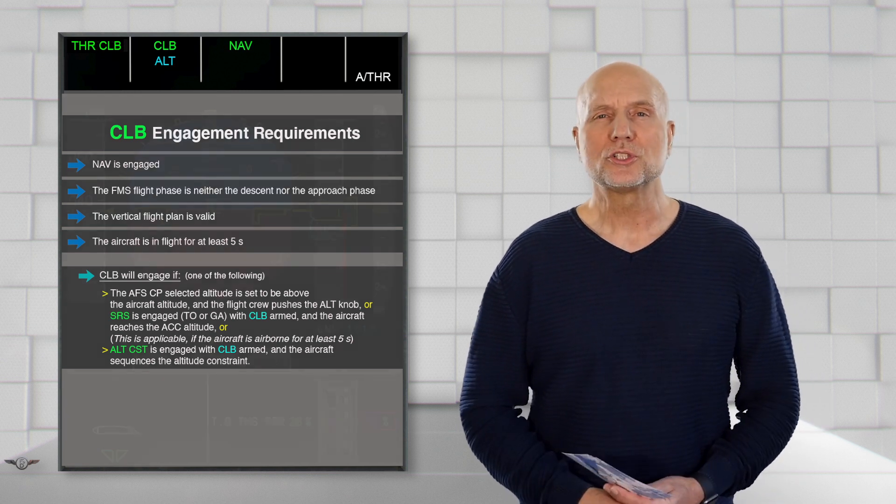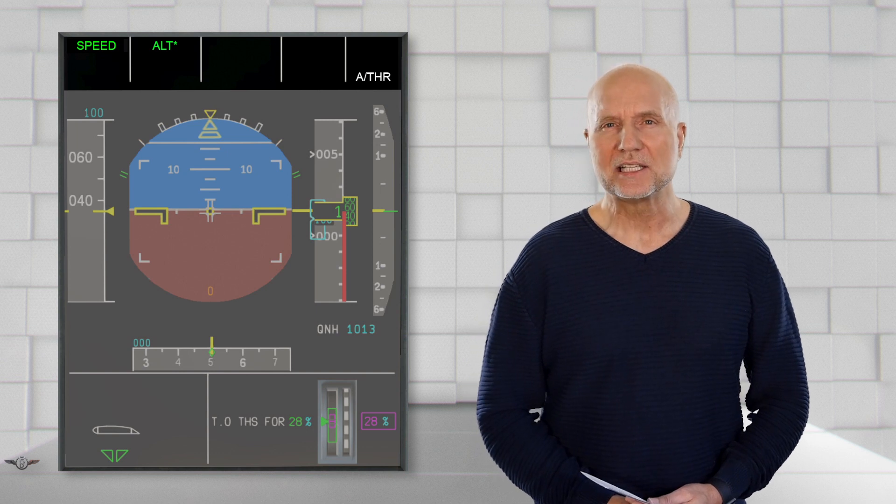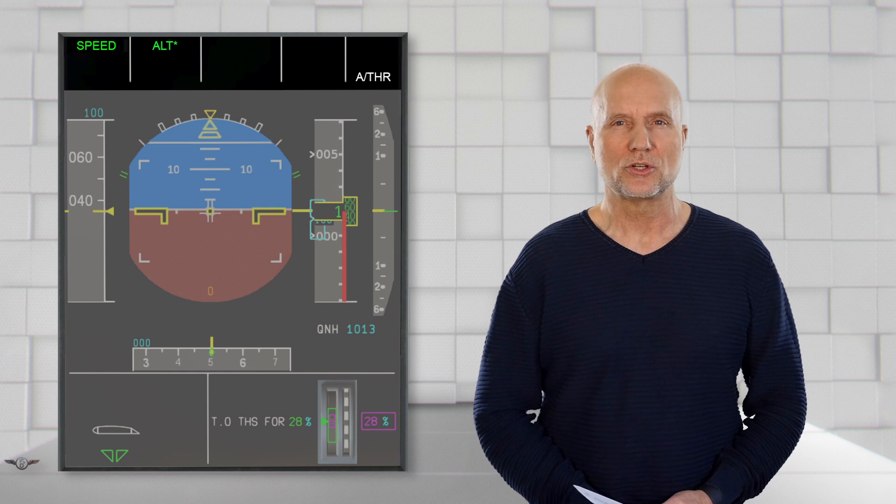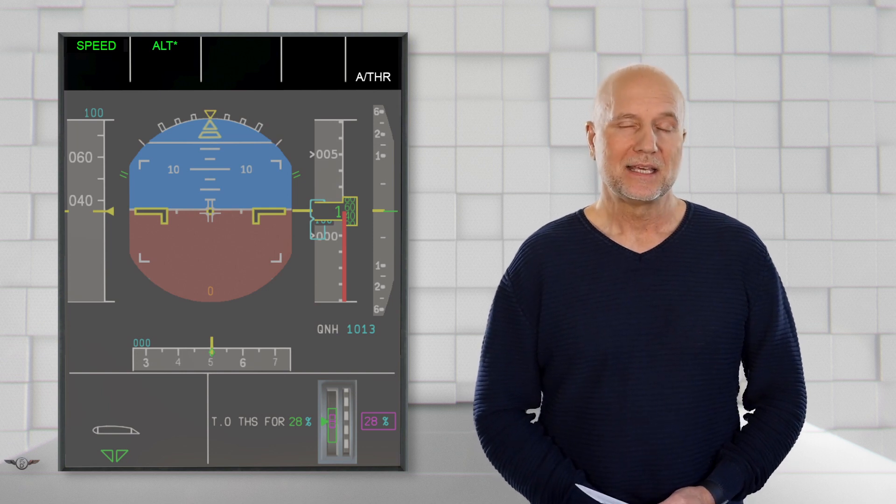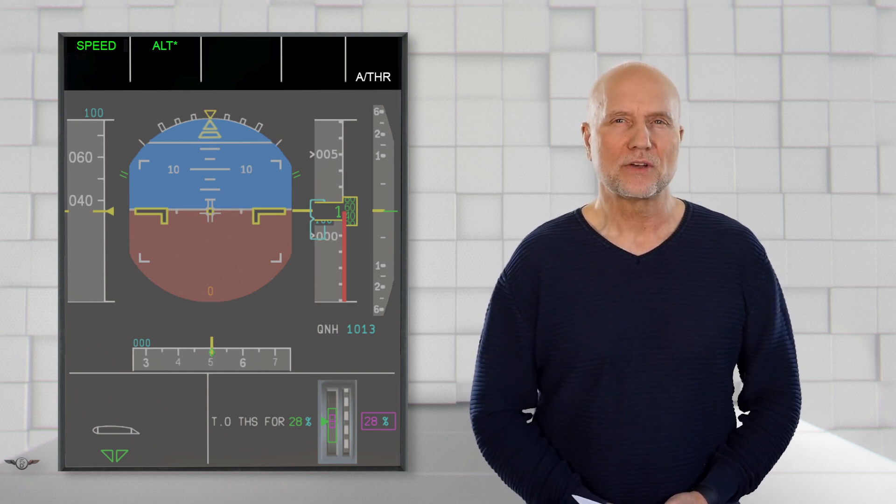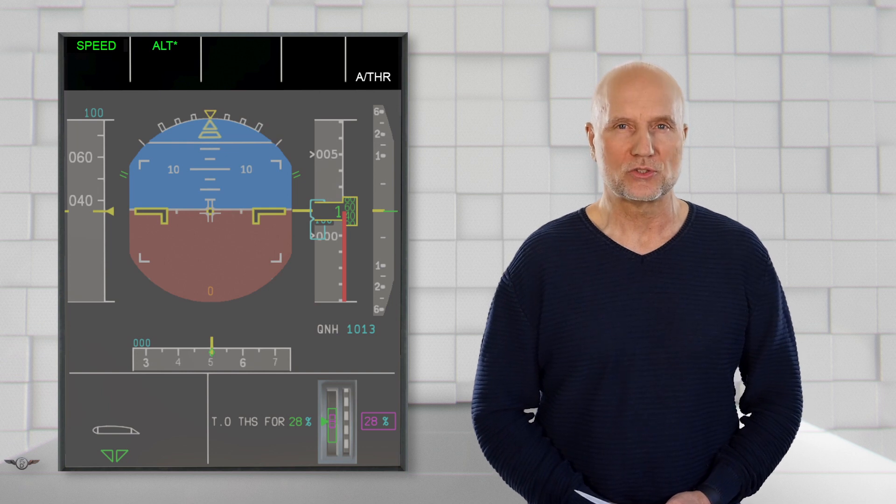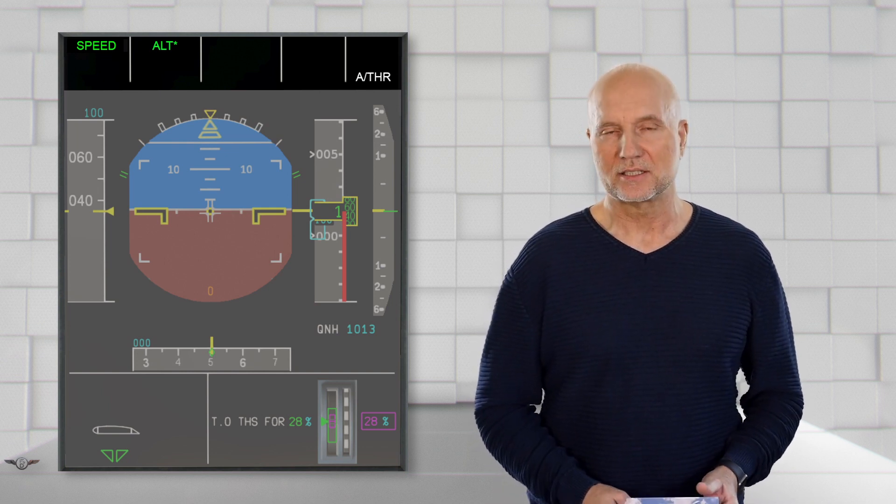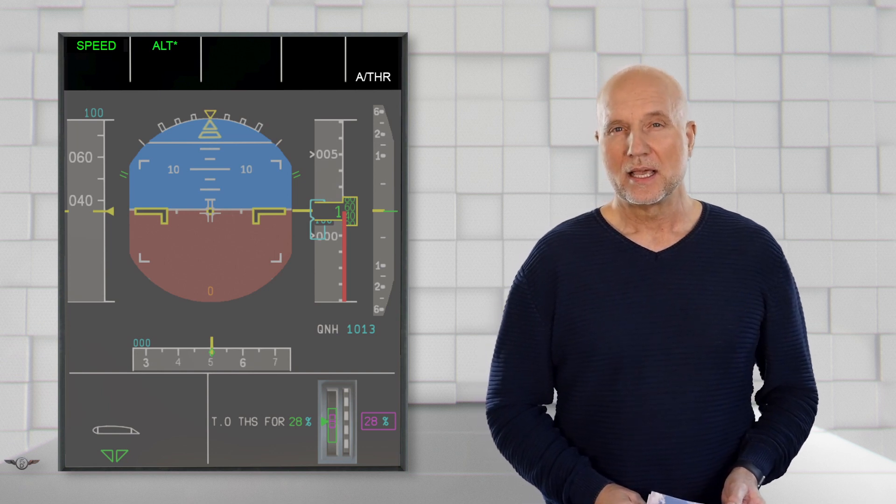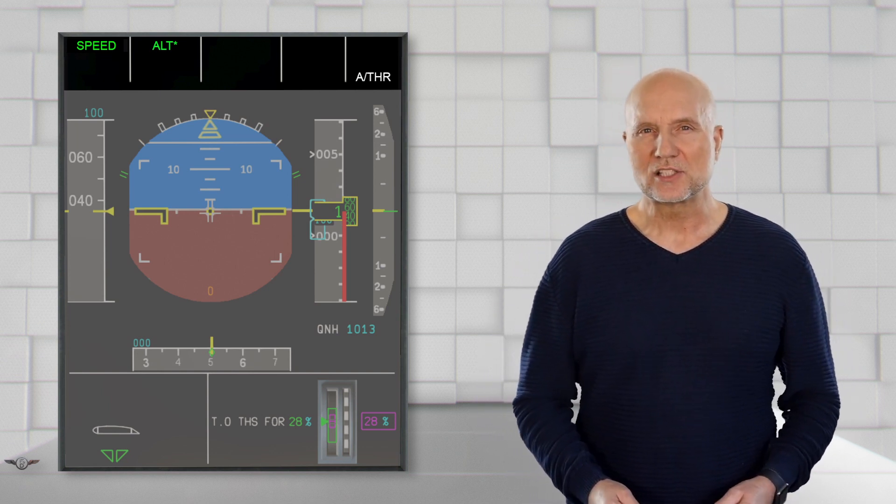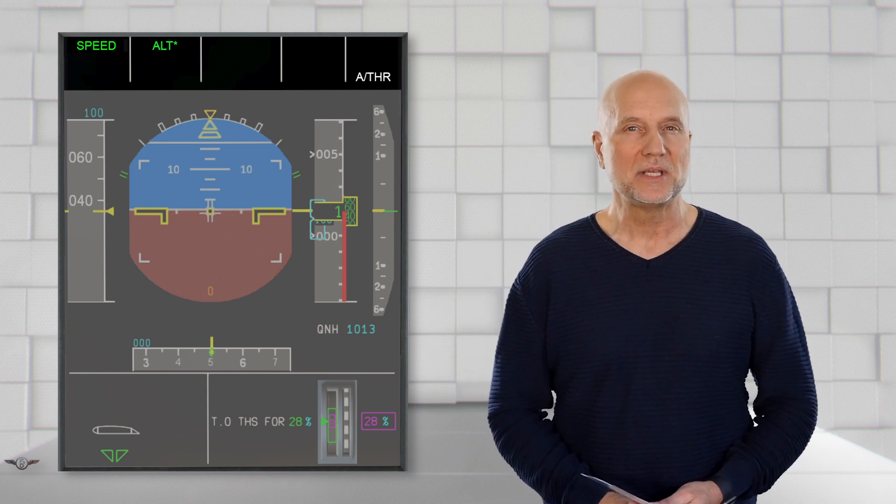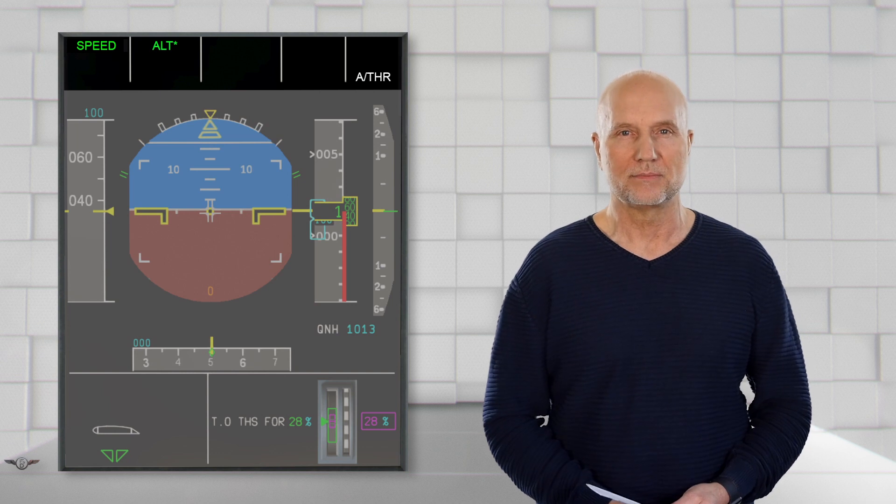Our next mode, Altitude Star. ALT star is the altitude acquire mode for the upcoming altitude selected on the AFS-CP. It engages once the aircraft reaches the zone in capture zone, which is within 250 feet of the selected target altitude. As you see as well, the thrust mode in column one has changed to speed, as the speed is now controlled by the autothrust system.